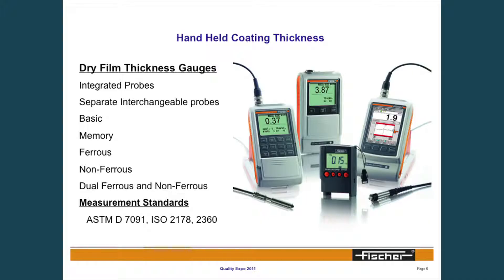One of the most common test methods are handheld dry film thickness instruments. These are used for determining paint or powder coating thickness, and they come in the form of integrated probe instruments or probes on a cable. They are also available in basic instruments or instruments that provide memory and documentation. Depending on the specific application determines which instrument you would select.